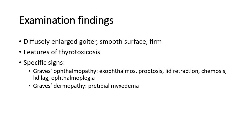We should also look out for features of thyrotoxicosis. There are some specific signs such as Graves' ophthalmopathy, which is often seen in Graves' disease, which includes exophthalmos, proptosis, lid retraction, chemosis, lid lag, and also ophthalmoplegia.